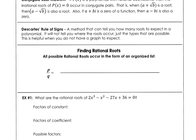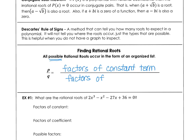When we're finding rational roots, you can make an organized list of all possible or potential rational roots by using the factors of the constant term and the factors of the leading coefficient term, dividing those numbers. We'll see how that list works in our first example — factors of the constant term divided by factors of the leading coefficient.